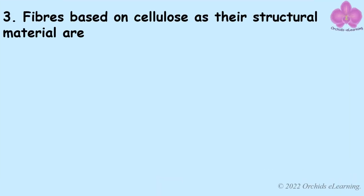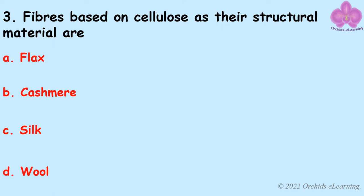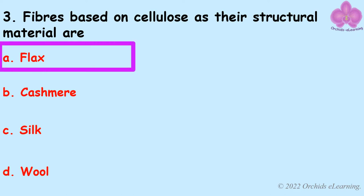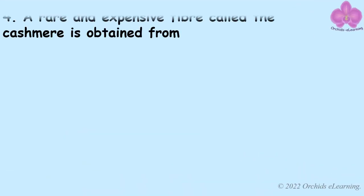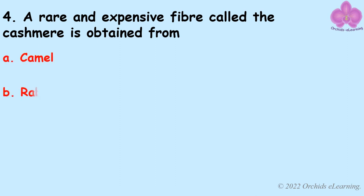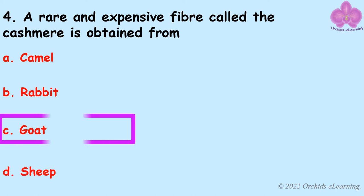Fibers based on cellulose as their structural material are — answer A: Flax. A rare and expensive fiber called cashmere is obtained from — answer C: Goat.